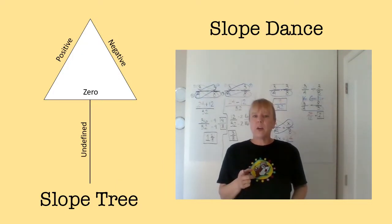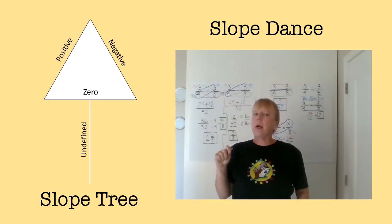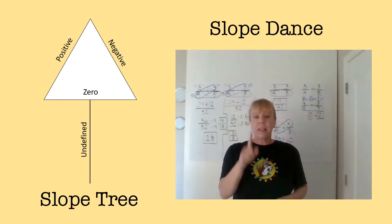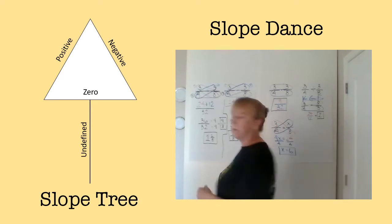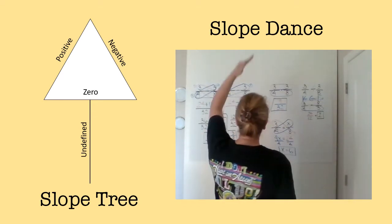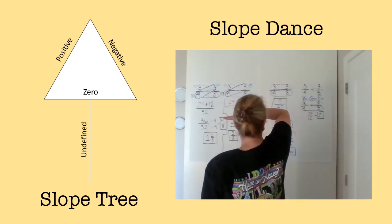So the one thing that my kids always remember is my slope dance. So here's my slope tree. Everybody writes it on the side of their paper so they can remember everything, but how they remember it is by doing the slope dance. Okay, so first I'm going to do it with you. Okay, so it's positive, negative, zero, and undefined.